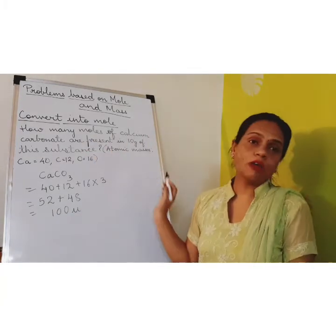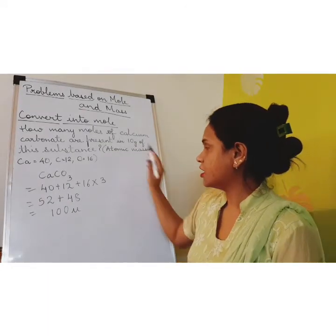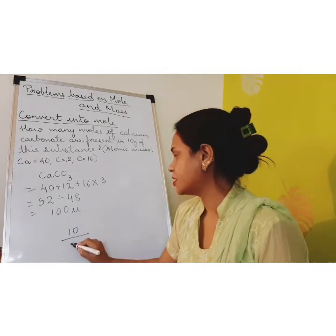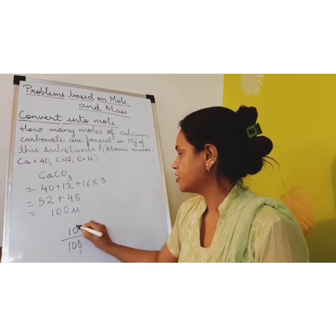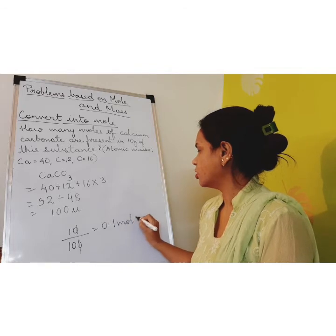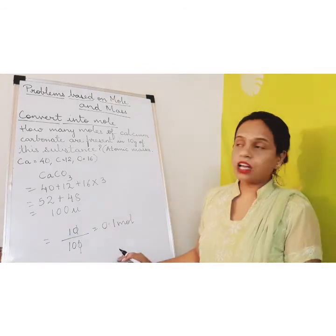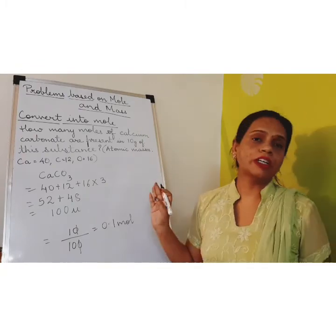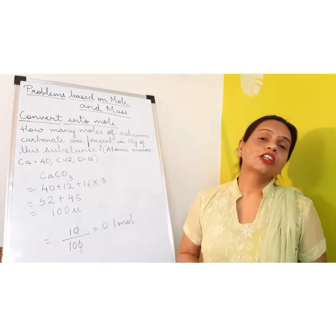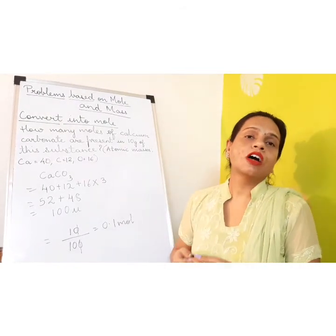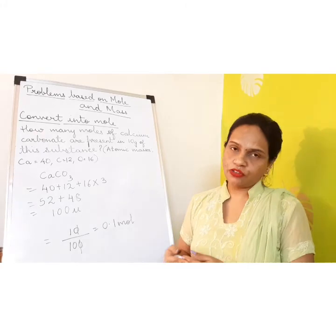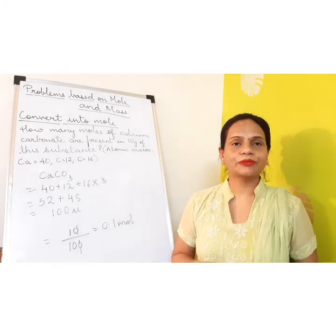Now we calculate how many moles: the given mass is 10 grams upon the molar mass of 100, which gives us 0.1 mole. So these are the number of moles of calcium carbonate present in 10 grams of this substance. Tomorrow we will be doing more problems for calculation of mass and number of atoms and molecules. If you all have any doubts, do let me know. Thank you.